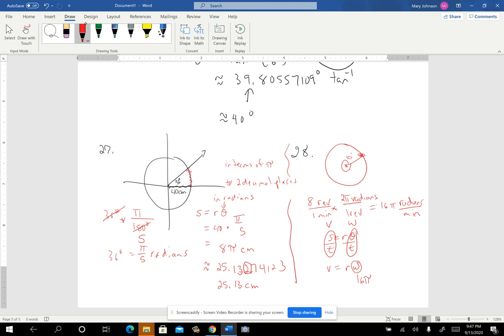And the 16 pi radians per minute, that's the W. The R is the radius, which is 10 feet. And so the V turns out to be 160 pi. And they wanted it in terms of pi and then rounded to one decimal place. So that is the answer in terms of pi.